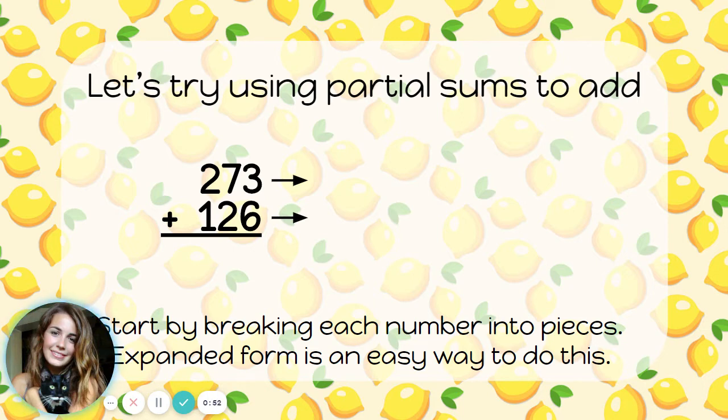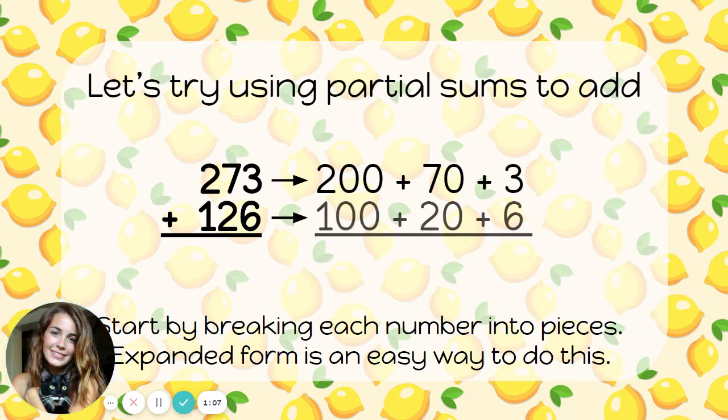So I'm adding 273 plus 126. I'm going to write both of those numbers in expanded form like this. 273, that's 200 plus 70 plus 3. 126, that's 100 plus 20 plus 6.